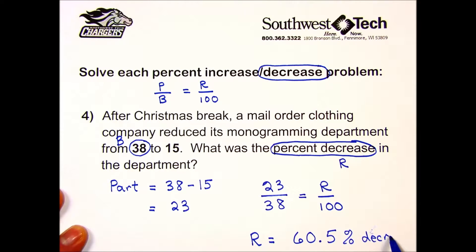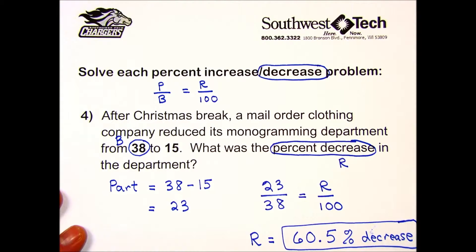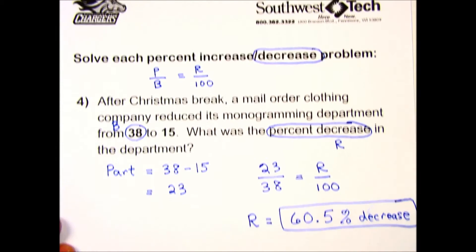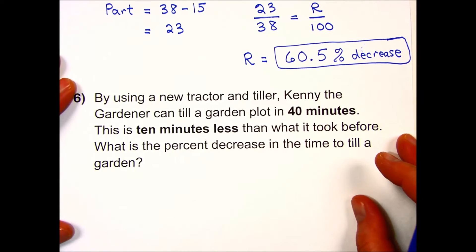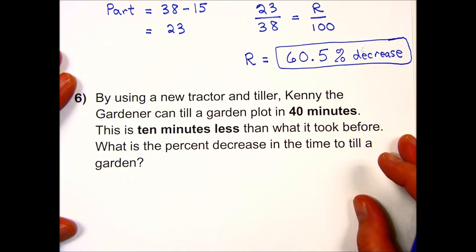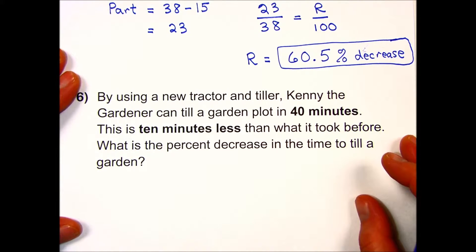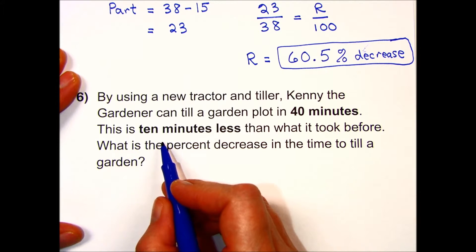60.5 percent decrease in their workforce. Let's try number 6 together. By using a new tractor and tiller, Kenny the Gardener can till a garden plot in 40 minutes. This is 10 minutes less than what it took before. What is the percent decrease in the time to till the garden?